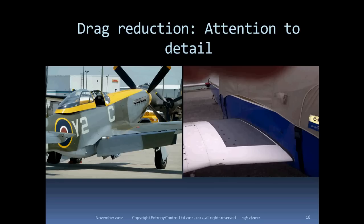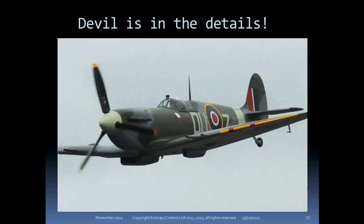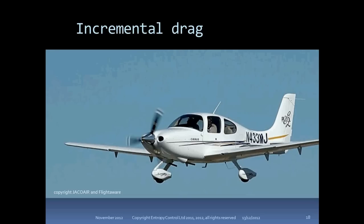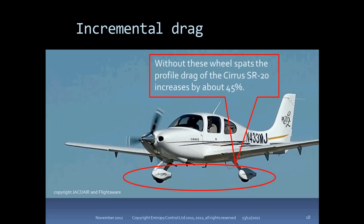Remember that a little flat plate area can have a big effect on drag? Does anybody see a flat plate here? The rear view mirror. That rear view mirror is responsible for over 5% of the total drag of this aircraft at top speed. Later in the war, the Spitfire was fitted with a teardrop canopy for several reasons, one of which was to get the mirror in out of the airstream. Here's another example: the Cirrus range of aircraft are composite, with very smooth skins and very good streamlining, so they are efficient aerodynamically. But if you take off those wheel spats, the parasitic drag of the whole aircraft goes up by about 45%. So a small change to a well-streamlined aircraft can have really quite enormous effects.